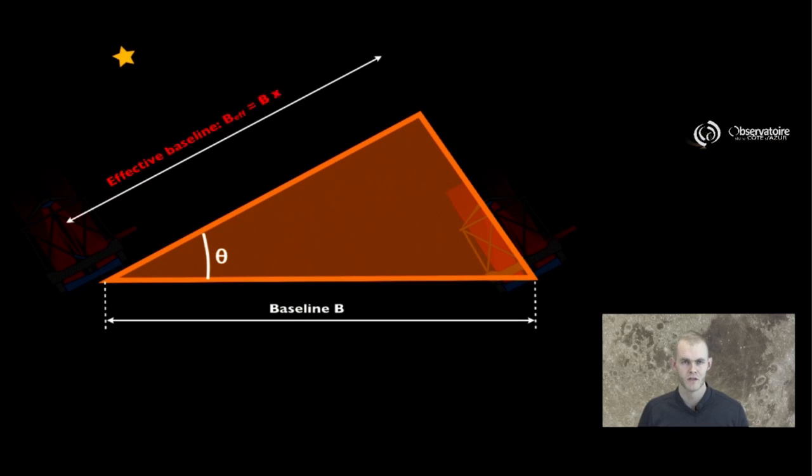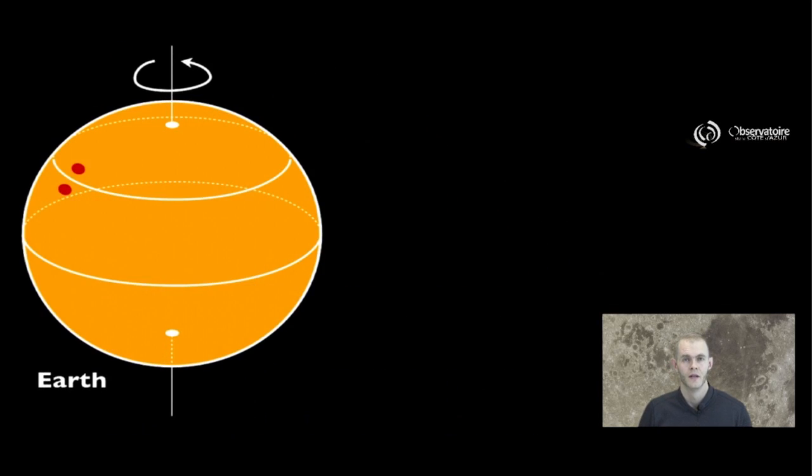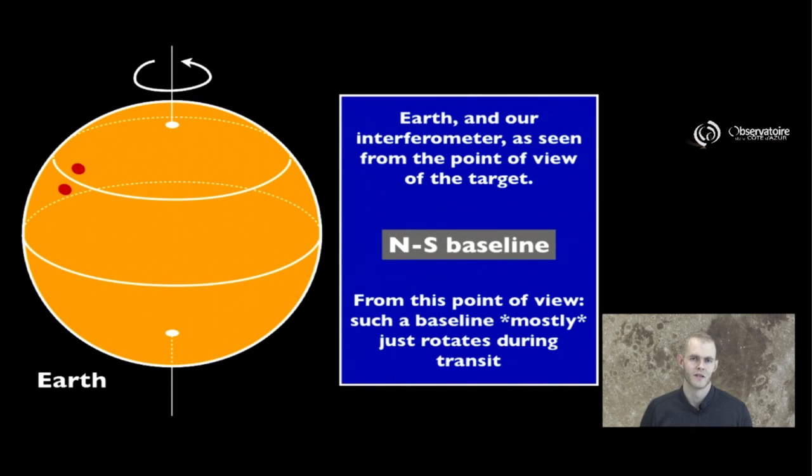You can see that, from the point of view of the star, it seems like the distance between the two telescopes is actually shrinking. The exact details of how that baseline is going to shrink turn out to matter a lot to the observations we are trying to make. They depend a lot on the actual geometry of our interferometer and its orientation relative to the Earth rotation axis.